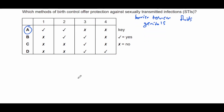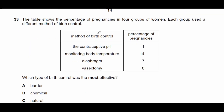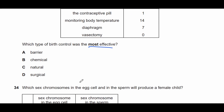Question thirty-three: the table shows the percentage of pregnancies in four groups of women using different birth control methods. Which type is most effective? The lower the percentage of pregnancies, the more effective the method. The most effective is vasectomy at zero percent — it is a surgical procedure. Therefore the answer is vasectomy.